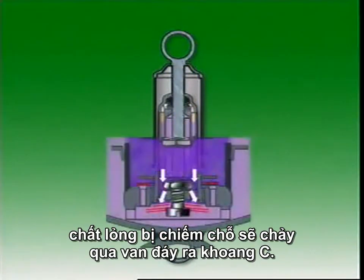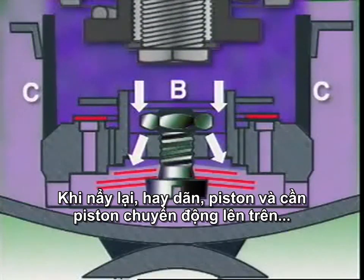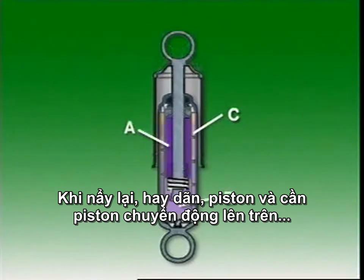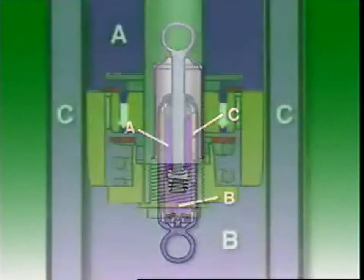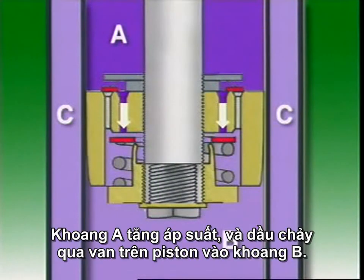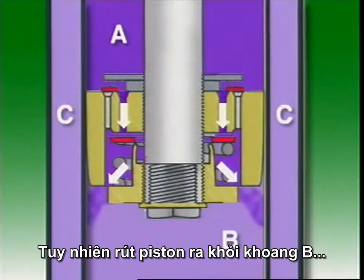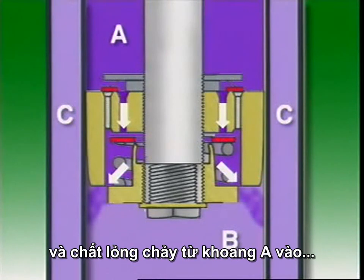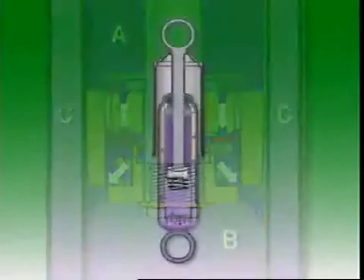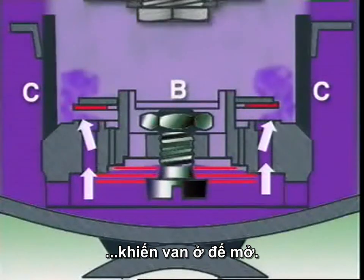The displaced fluid is forced down through a base valve and out into reservoir C. In the rebound or extension phase, the piston and rod move upwards and the volume of chamber A is reduced. Chamber A becomes a high pressure area and fluid flows through the extension valve in the piston into chamber B. However, the withdrawal of the piston from B greatly increases its volume, and fluid flow from A is insufficient to fill the space. Pressure in B falls below that of the reservoir, causing the base intake valve to be unseated.